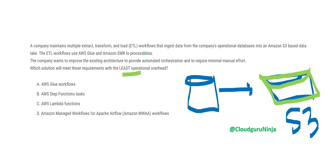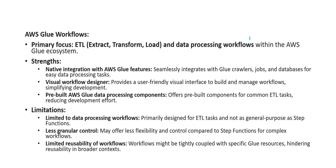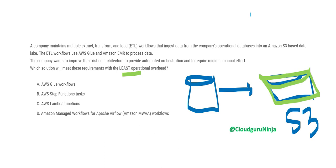All options help with orchestration, but which one works here? Glue Workflows work only if you are talking about Glue jobs alone. In this question, Glue is not the only service — EMR is also used for processing. If there are two heroes — Glue and EMR — I cannot just use Glue Workflows, as it only works for Glue, not EMR. Lambda Functions are also a problem: Lambda dies after 15 minutes. If data processing takes more than 15 minutes, it will not work.